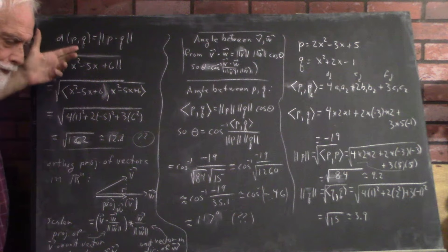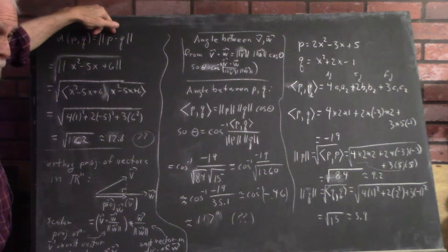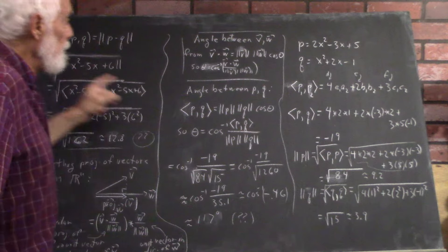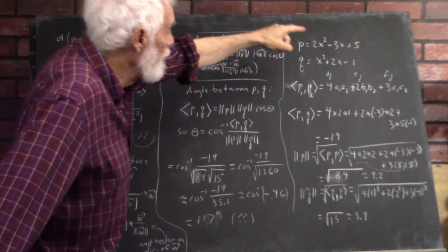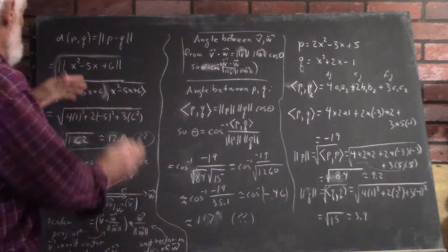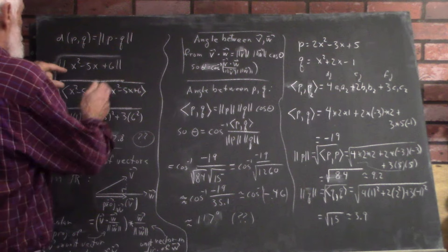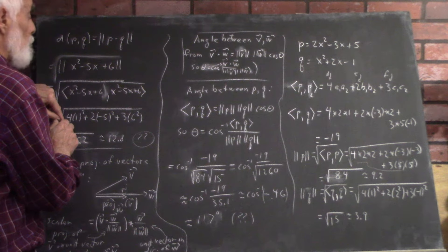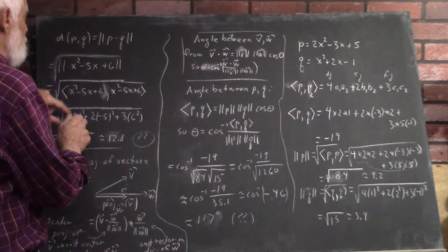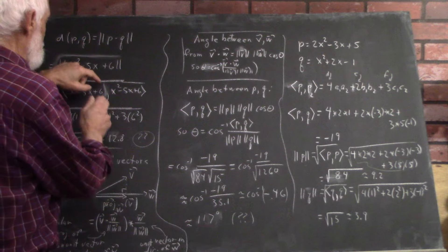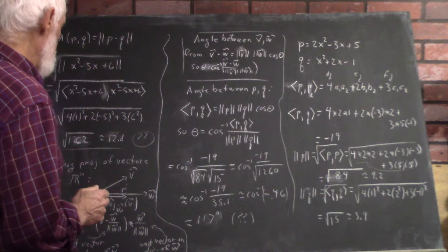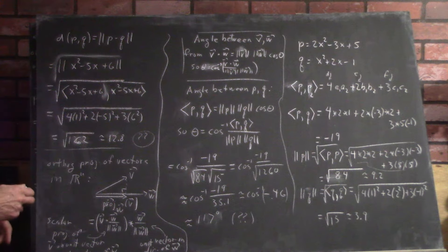The distance between P and Q is the magnitude of P minus Q. P minus Q is x² minus 5x plus 6. The norm of this is the square root of 4(1²) plus 2(−5²) plus 3(6²), which equals the square root of 4 plus 50 plus 108, or the square root of 162, which is about 12.8. The method is correct — check the arithmetic yourself.